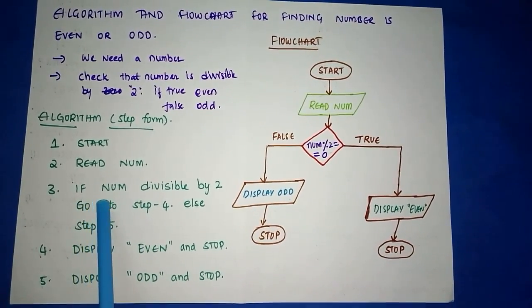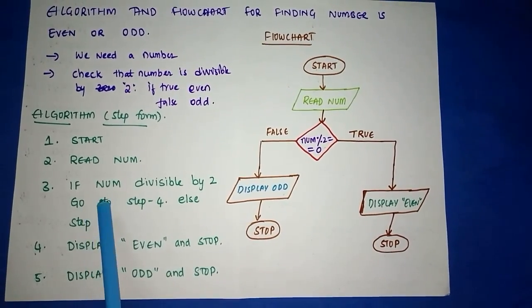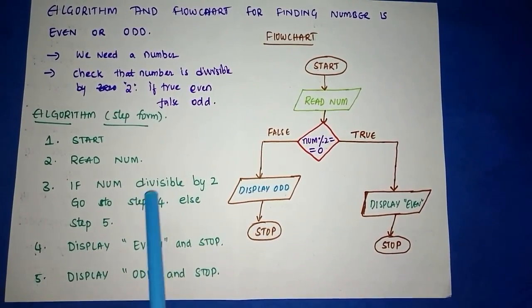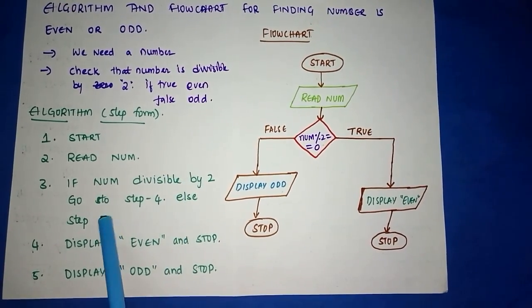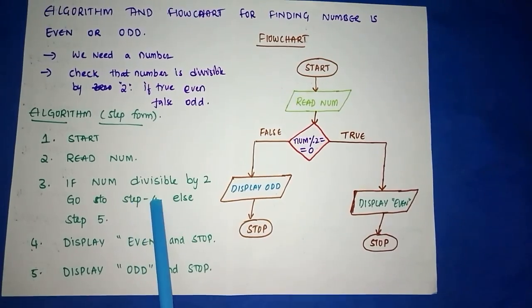In step 3, what you are doing is checking if the number is divisible by 2 or not. If the number is divisible by 2, then you say it is even. Otherwise, you should say it is odd. For that, what we are doing is: if it is divisible by 2, go to step 4, else go to step 5.